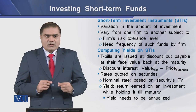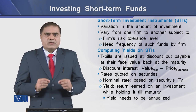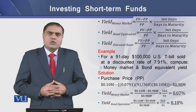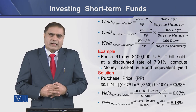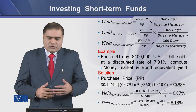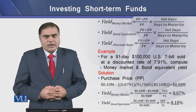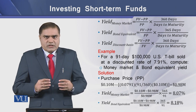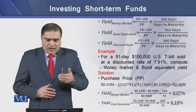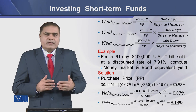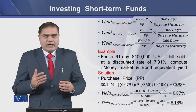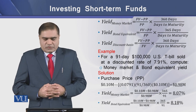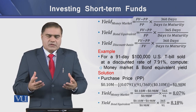To analyze the return on these investments, the yield needs to be analyzed. There are three types of yields we can determine. The yield on money market is basically the discount interest divided by the purchase price, and this return is then annualized by multiplying by 360 days divided by the maturity period of the security.